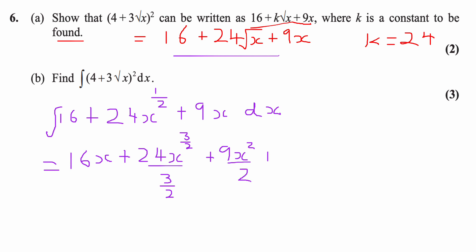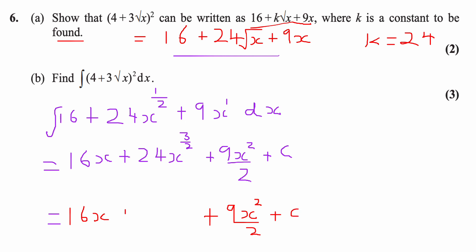We add a constant of integration c because it's an indefinite integral. Now simplify: dividing by 3/2 is the same as multiplying by its reciprocal 2/3. So 24 × (2/3) = 16, giving 16x^(3/2). The full simplified answer is 16x + 16x^(3/2) + 9x²/2 + c.